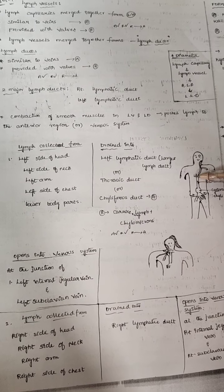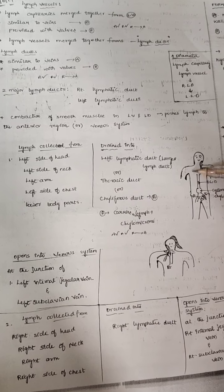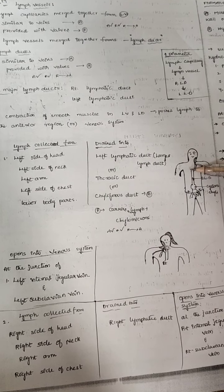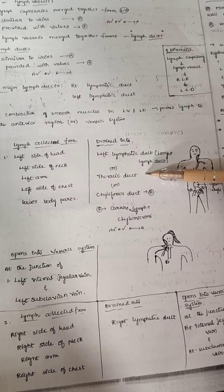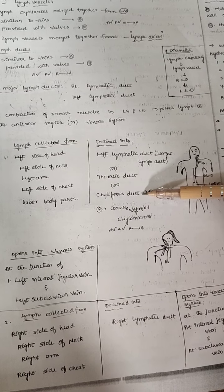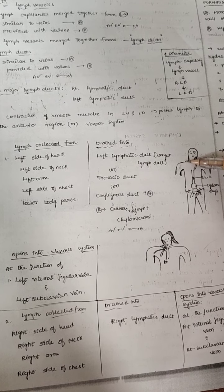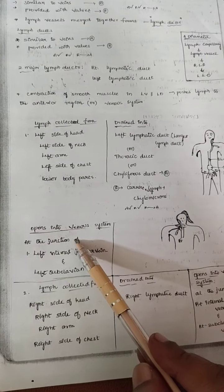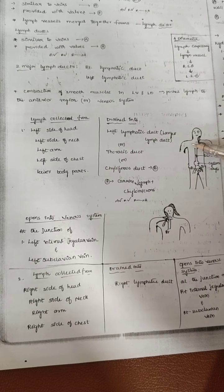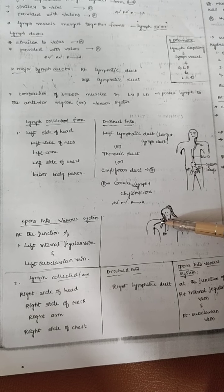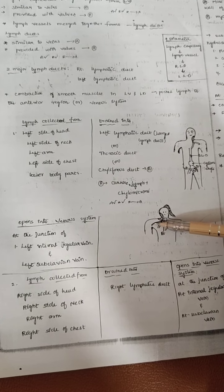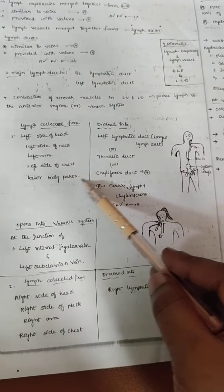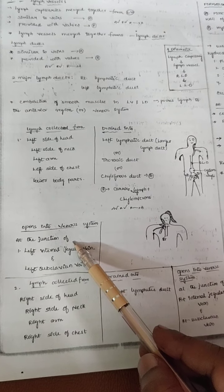The lymph collected from the left side of the head, left side of the neck, left arm, left side of the chest, and lower body parts is drained into the left lymphatic duct. This is the largest lymphatic duct and is also called the thoracic duct or chyliferous duct. It carries chylomicron acid fat globules and enters into the venous system at the junction of the left internal jugular vein and left subclavian vein, then enters into the right atrium.